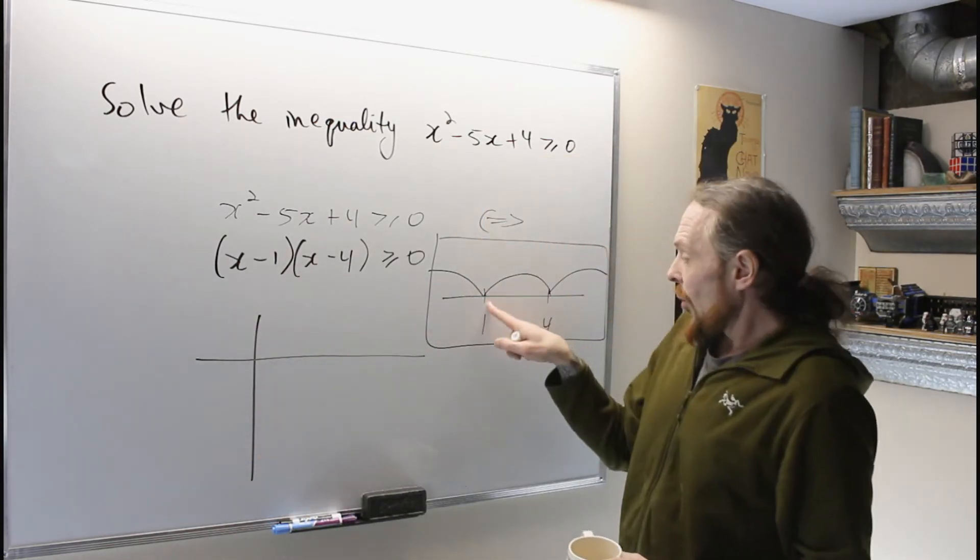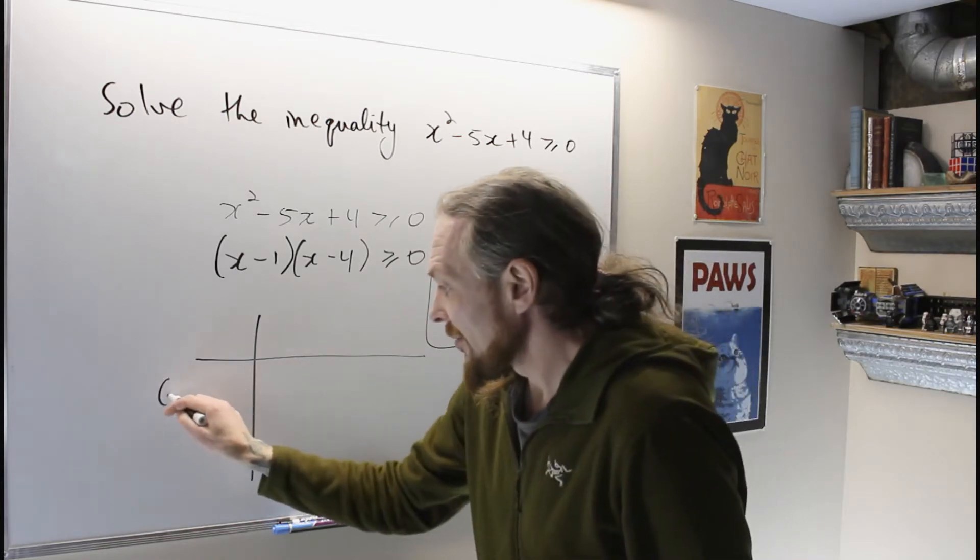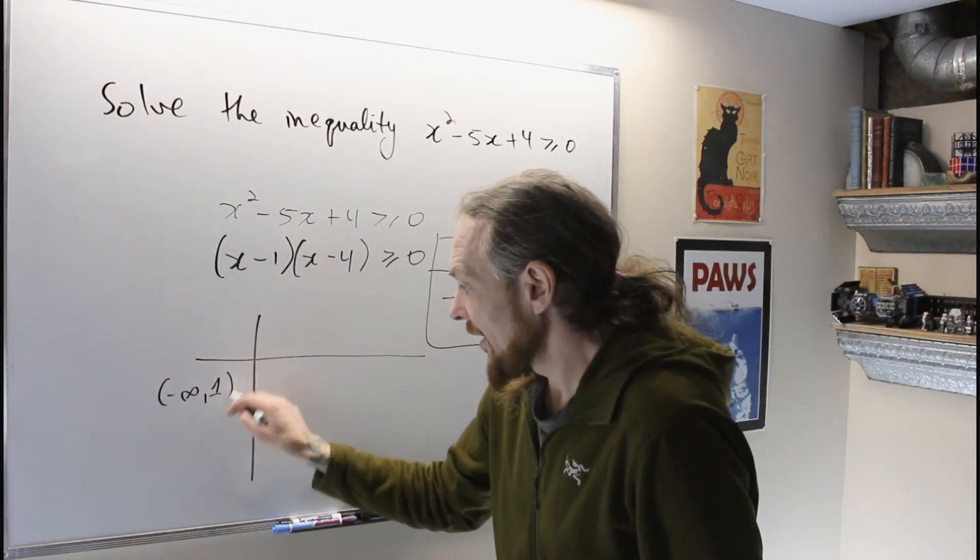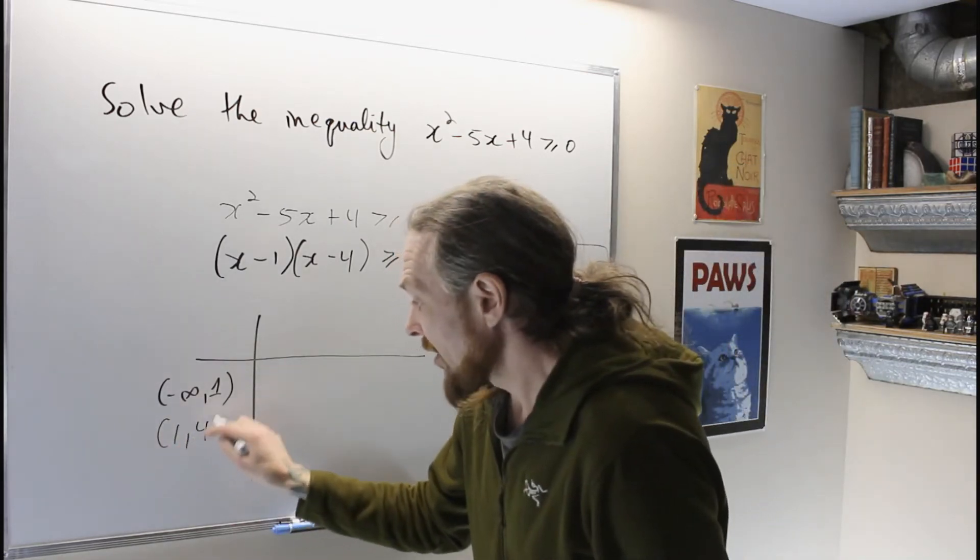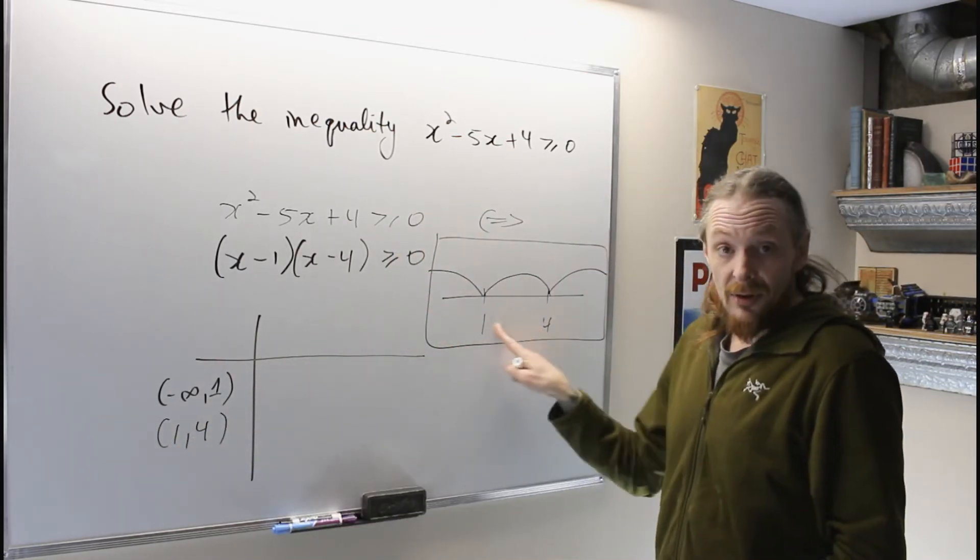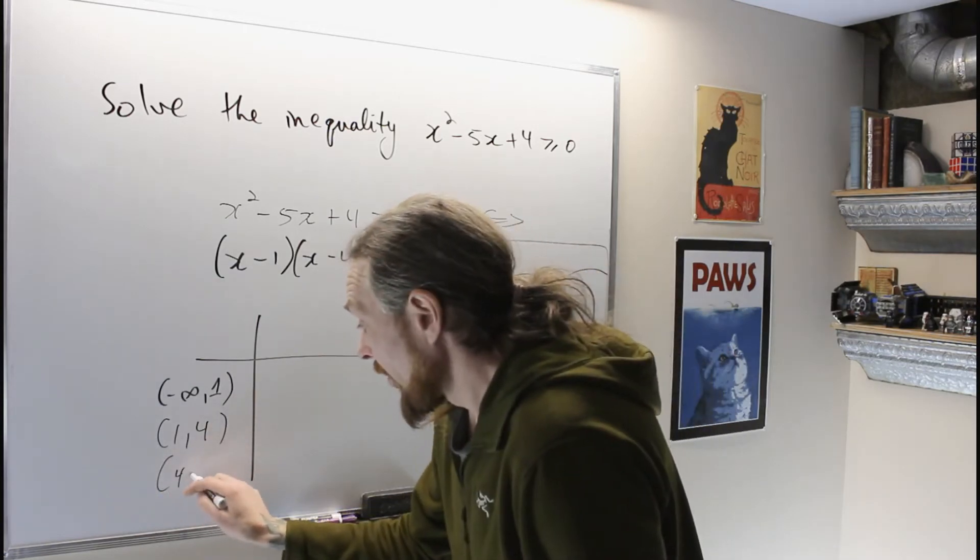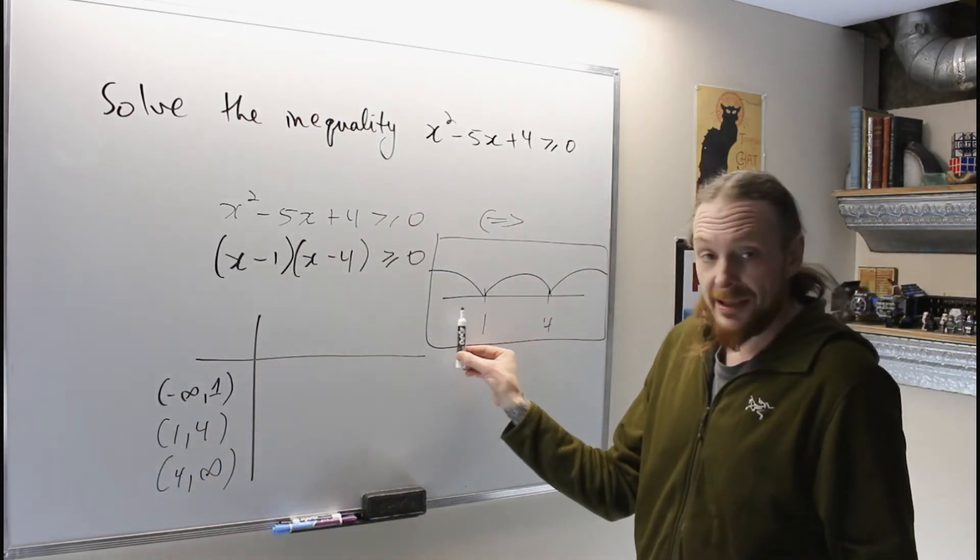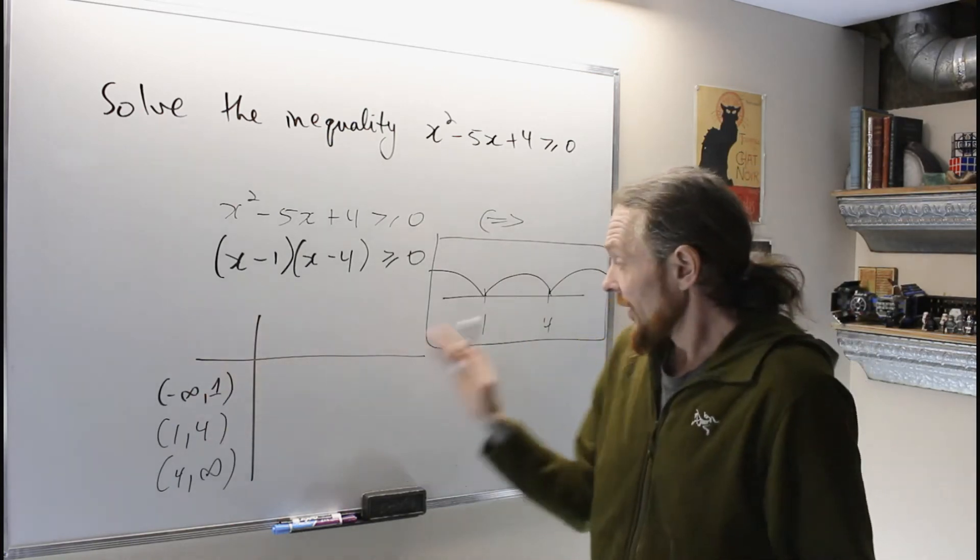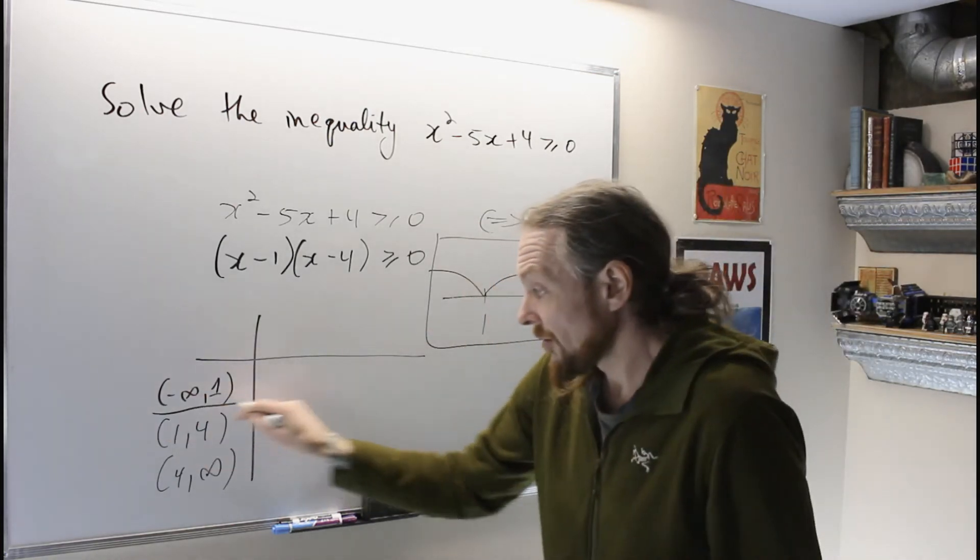It was 0 at 1 and 4, so that splits me into three intervals. In interval notation, that's negative infinity to 1, this interval, 1 to my next root, 1 to 4, this interval, and then 4 to infinity. Notice I've listed them as the lowest interval or the leftmost interval to the rightmost interval in my rows.